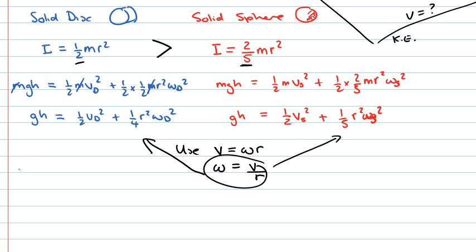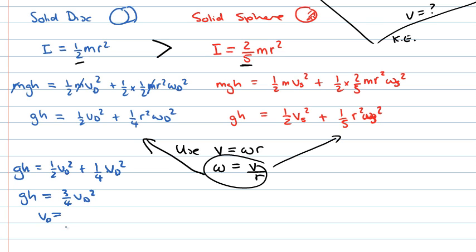Substituting ω = v/r into the disk equation gives: gh equals one-half v²(disk) plus one-quarter v²(disk), which simplifies to three-quarters v²(disk) equals gh. Rearranging, the velocity of the disk is the square root of four-thirds times gravitational acceleration times the height of the slope.